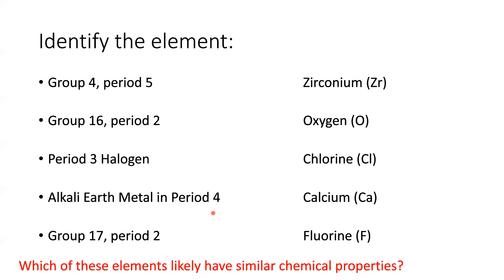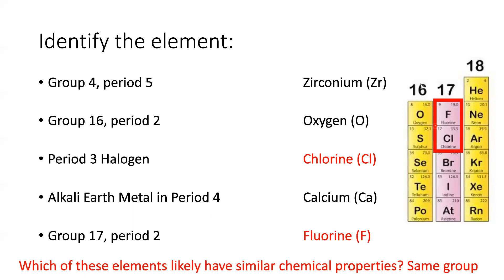Now looking at these elements and thinking about which of them is going to have the most similar chemical properties to one another, we want to think about the periodic law — what that represents. Zirconium and calcium are kind of on their own — they're not really near anything, not in the same group or the same period as any of the other elements. But oxygen, chlorine, and fluorine are all near the top right of the periodic table. Oxygen is to the left of fluorine; chlorine is just underneath fluorine. We want to recognize that we're going to see similar properties within these groups, so fluorine and chlorine are going to be chemically similar. Even though oxygen is one group to the left of fluorine, we don't see the similar chemical properties repeat as we go left to right — only going up and down. So fluorine and chlorine are going to be chemically similar, but none of these other elements will be.